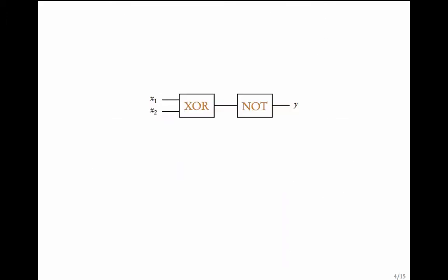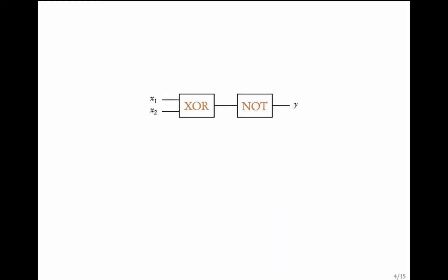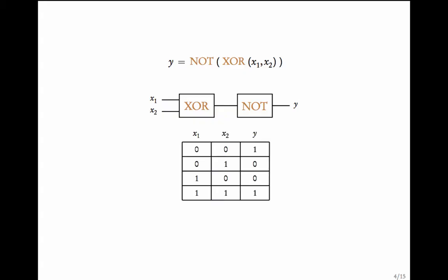Using these gates you can combine them to get more complex circuits. These are the Boolean function representations of these gates. When you combine them, the output Y is NOT of XOR of X1 and X2. Given the inputs, you first compute the exclusive OR and then take the NOT. So if the inputs are 0 and 0, XOR of 0 and 0 is 0, and NOT of 0 is 1.